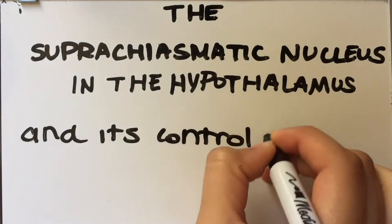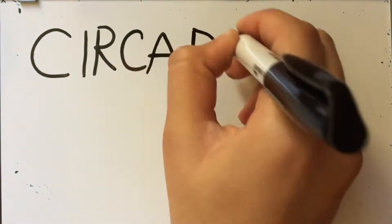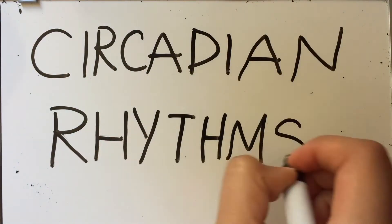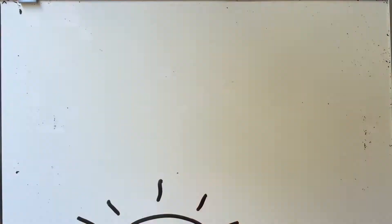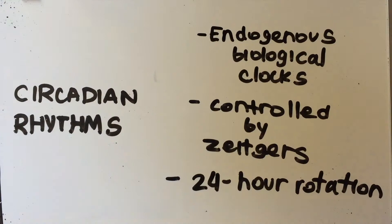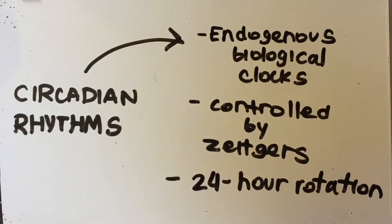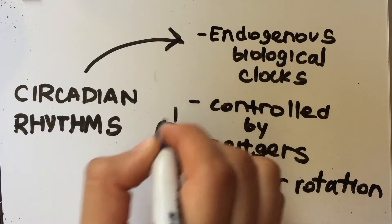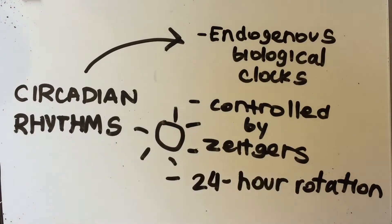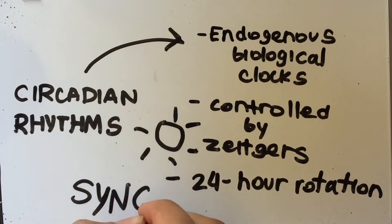The suprachiasmatic nucleus in the hypothalamus and its control of behaviors associated with circadian rhythms, by Maria Camila Sanchez, Biology and Neurobehavior. Circadian rhythms are humans' endogenous biological clocks which use environmental cues known as zeitgebers to naturally synchronize our organism to the Earth's 24-hour rotation cycle.